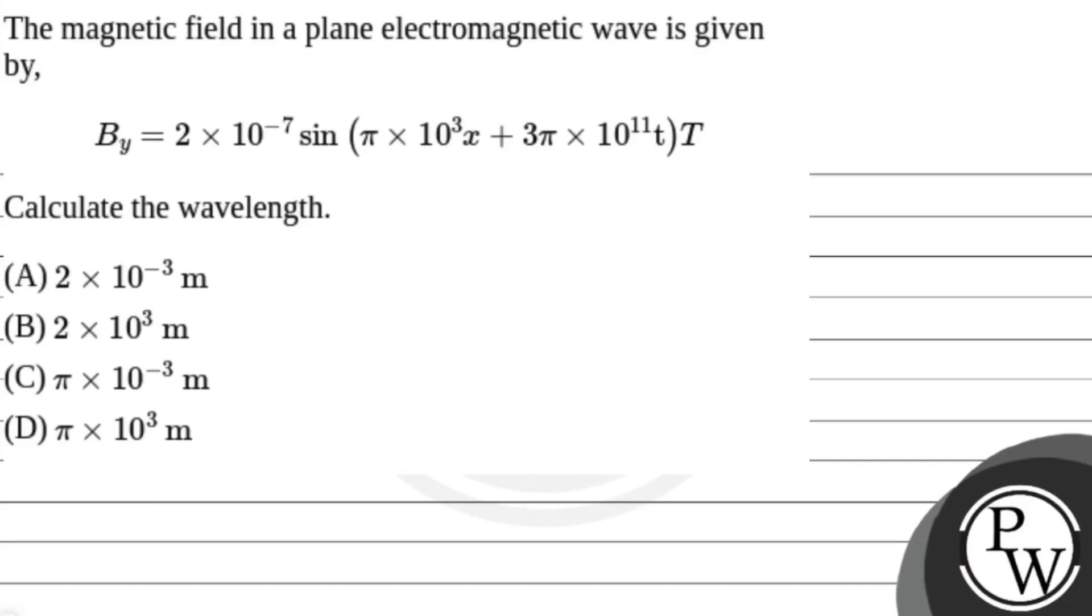Hello, let's read the question. The magnetic field in a plane electromagnetic wave is given by By equals 2 into 10 to the power minus 7 sin, pi into 10 to the power 3x plus 3pi into 10 to the power 11t tesla. Calculate the wavelength.